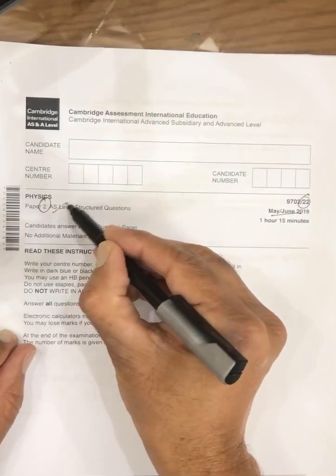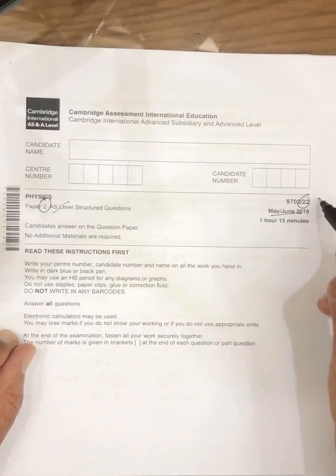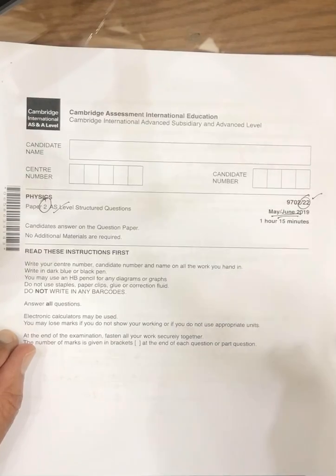Okay, next paper is paper 2, and its variant is 22, year May, June, 2019.